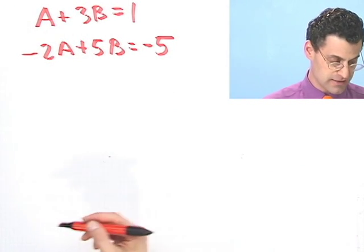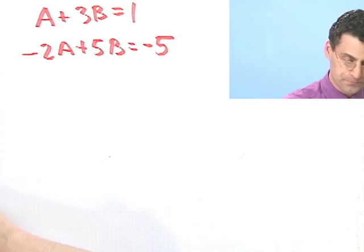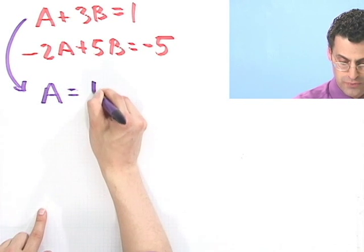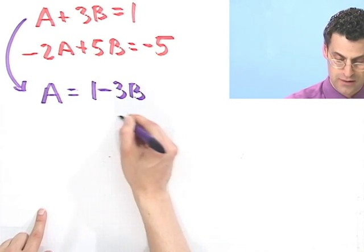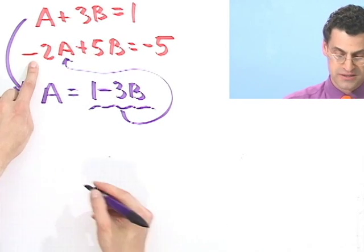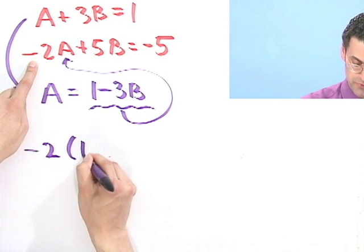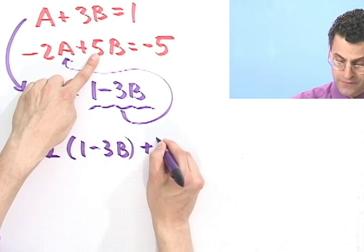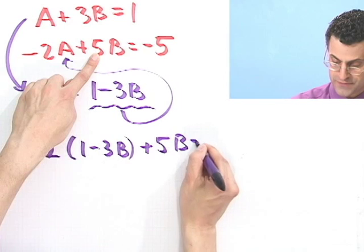So in fact, I now have two equations and two unknowns. So now I solve this using a substitution method, or any other method that you want. Let's take this and solve it for a. So a equals 1 minus 3b. If I now insert that here for a, what I would see is minus 2 times 1 minus 3b, that's just a, plus 5b equals minus 5.